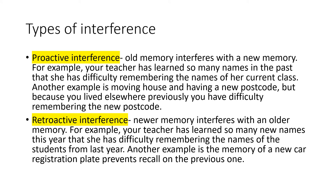Now we have your types of interference. Students get confused about this — it will come up as a big 16 or 12 marker at some point, so you need to be prepared. A way I remember this: proactive — 'pro' is three letters long and 'old' is three letters long, and 'pro' has an O in it, and so does 'old'. So proactive means old interferes with new, which means retro has to be the opposite: a new memory interferes with an older memory.